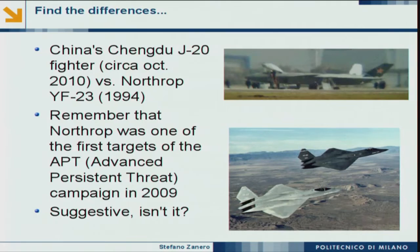The bar for being a target is going lower and lower. Nobody cares if you are not Microsoft, Bank of America, or Fiat Chrysler anymore. You can be smaller and still be attacked because the cost of attacking is getting lower. One of my favorite examples: the Chinese fighter Chengdu J-20 and the F-35 prototype YF-23 by Northrop share some interesting similarities — basically the same aircraft. And Northrop was one of the first companies in the US penetrated by the APT, aggressive Chinese state-run campaigns targeting industrial networks.